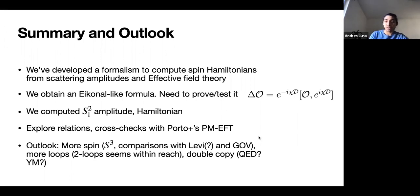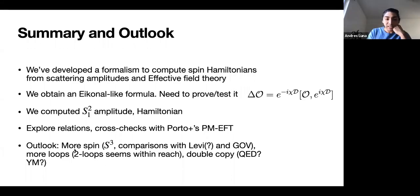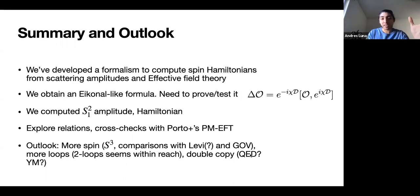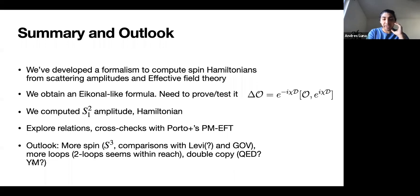For our outlook: we want more spin — going to spin-cubed looks pretty straightforward, and then we can compare to results of Vines, or the results of Michele Levi, who has computations to spin-cubed but hasn't yet translated to Hamiltonians or observables that we can easily compare to — she has promised a paper and I'm looking forward to it. We also want to go to more loops; new two-loop integration techniques make it seem within reach. And we want to explore double copies: so far our double copy goes to QED because we're only interested in Compton amplitudes at five points for two loops, so maybe explore it with a proper Yang-Mills theory.